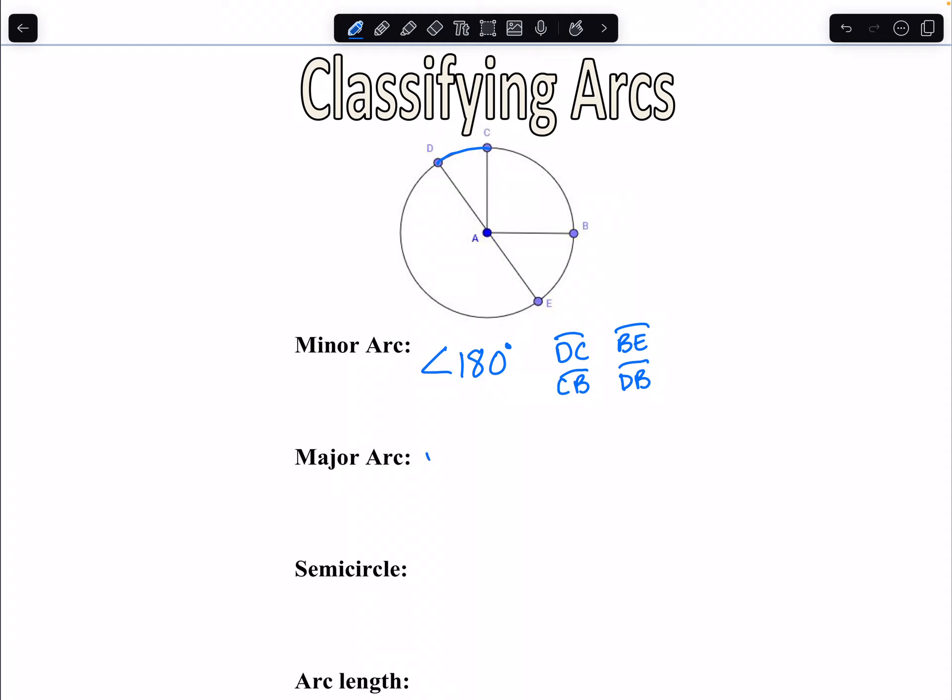A major arc would be greater than 180 degrees. So we can look at our half of a circle and anything greater than half the amount. So for example, CDE. Notice how I'm using three letters now? When we use two letters, we're assuming the shortest distance between the two. But if we include a third letter, now we're telling, now we're saying that we want to go the longer route. So what we're looking for here, we're starting at C. We're going through D, and we're ending over at E.